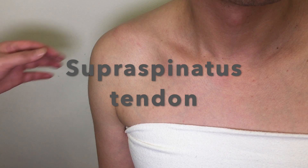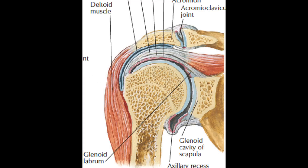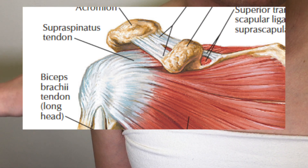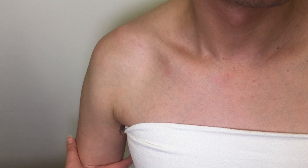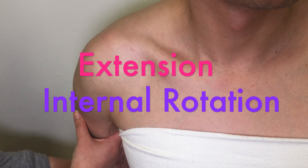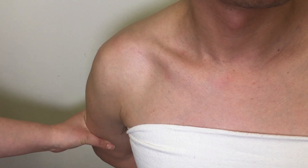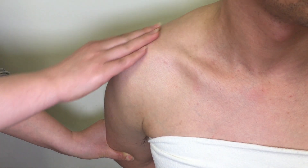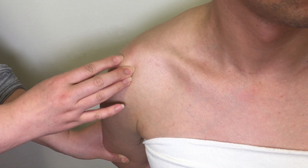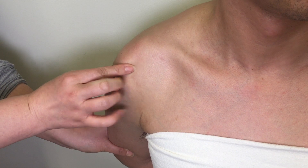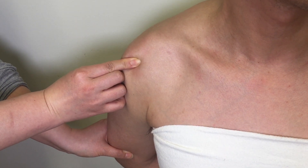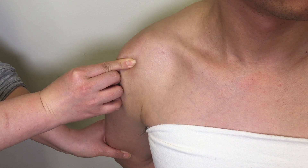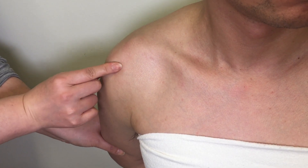Now, palpate the tendon and musculotendinous junction of the supraspinatus muscle. The tendon of the supraspinatus muscle is not accessible on everyone, but when you try to palpate it, have your patient's arm rest behind the back with a medially rotated shoulder. You may need to pull the arm inferiorly to expose more of the tendon, then palpate by moving inferiorly from the anterior aspect of the acromion. Press firmly through the deltoid fibers and roll your finger across the tail of the tendon where it is attached onto the superior facet of the greater tubercle. If your patient feels pain, it indicates supraspinatus tendonitis, tear, or bursitis.